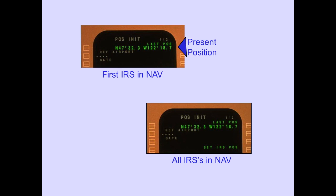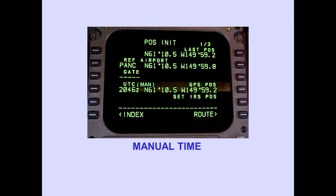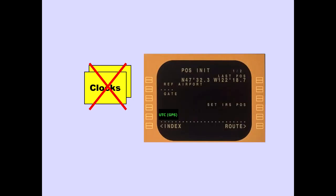The FMC displays the present position on the last position line when the first IRS enters the navigation mode. When all IRS's are in the navigation mode, the set IRS position blanks. The POS INIT page also displays the FMC time titled UTC. GPS in parentheses indicates the global positioning system is the source for the time hack. The FMS-CDU normally receives time from the GPS. If the UTC is displayed with MAN in parentheses, time is being received from the captain's clock. Blanks are displayed when clock information is not received.